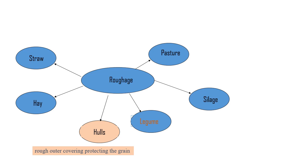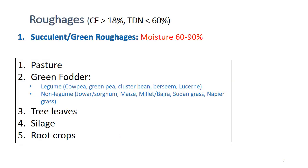Coming to the classification: roughages are feedstuffs that contain more than 18 percent crude fiber and less than 60 percent total digestible nutrients. They are divided into two subclasses. The first is succulent roughages, based on their moisture content — they contain 60 to 90 percent moisture. Succulents are also known as green roughages or wet roughages. Examples include green pasture and green fodder.